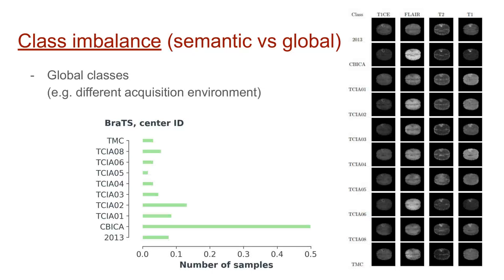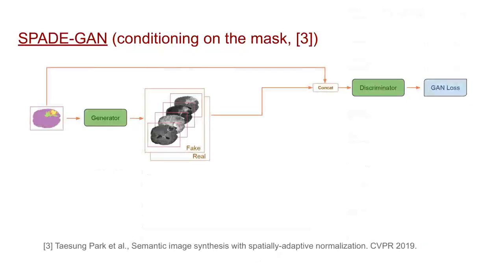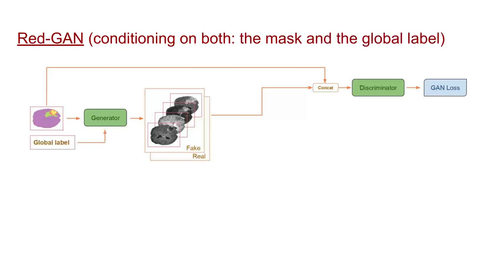Thus, it is of practical interest to also solve the imbalance problem for such global classes. To address the global class imbalance problem, we resort to conditional GANs. We equip the state-of-the-art SPADE GAN, conditioned on a label map, with global label conditioning. Such conditioning instructs the network to separate between global classes during training and allows control of class-specific generation during inference.